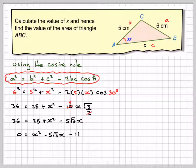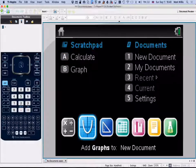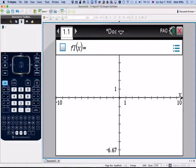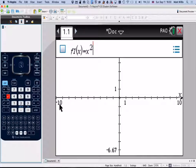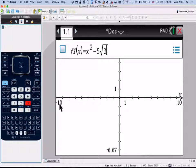So how are we going to solve that? We're going to use our GDC, and we're going to draw a graph and just find where the graph of y is equal to this, and find where it cuts the axis, but we'll ignore any negative values. So going to my GDC, going to graphing mode, and then putting in the function, which is x squared minus 5 root 3, so ctrl root 3, hit the arrow key, x minus 11.